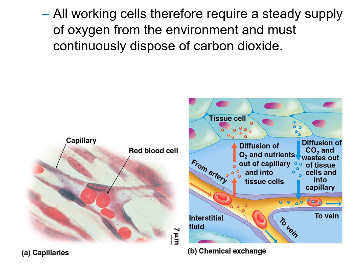All working cells therefore require a steady supply of oxygen from the environment and must continuously dispose of carbon dioxide. In this picture, we are at the capillary bed. Oxygen is diffusing from the capillary into the interstitial fluid, then into the tissue cell. Once inside the tissue cell, it goes to the mitochondria where it will be the final electron acceptor. During the breakdown of glucose, decarboxylation takes place in the prep step and the Krebs cycle, generating carbon dioxide, which leaves the cell back into the interstitial fluid and diffuses back into the bloodstream.